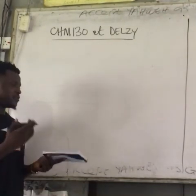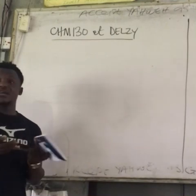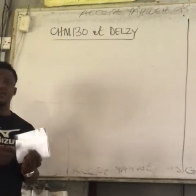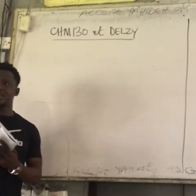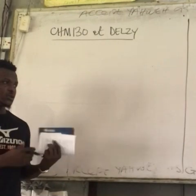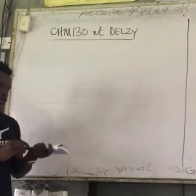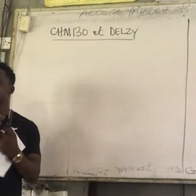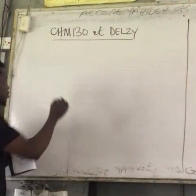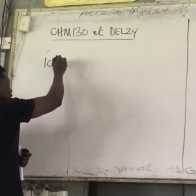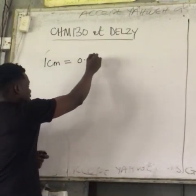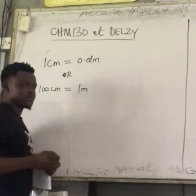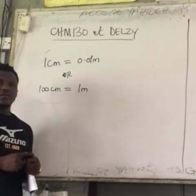Yesterday I was trying to explain the relationship between centimeters and meters. Someone mentioned from secondary school that centimeters is 10 raised to minus 2. So I took time to explain that. If you're asked to convert from centimeters to meters, the first thing to look for is the relationship between those two units. One centimeter equals 0.01 meters, or 100 centimeters equals one meter.